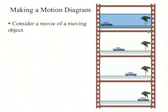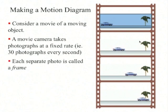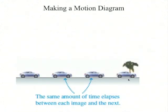Motion diagrams. Consider making a movie of a moving object. A movie camera takes photographs at some fixed rate, such as 30 photographs every second, and each separate photo is called a frame. If you have a moving object, it will be at a slightly different position in each frame of a filmstrip.